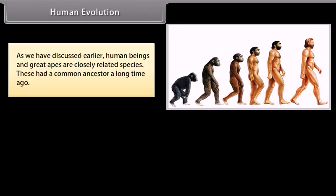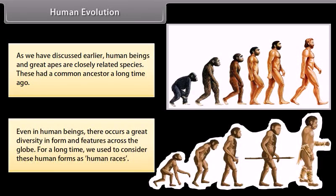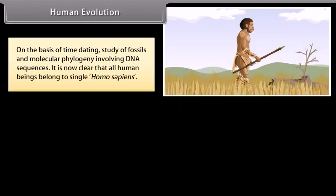Human beings and great apes are closely related species that had a common ancestor a long time ago. Even in human beings, there occurs a great diversity in form and features across the globe. For a long time, we used to consider these human forms as human races. On the basis of time dating, study of fossils, and molecular phylogeny involving DNA sequences, it is now clear that all human beings belong to a single Homo sapiens.